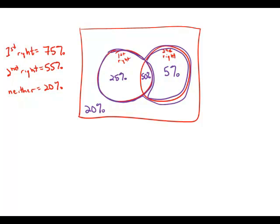That adds up to 100%. What we're interested in is the overlap region of 50%. And that is answer choice D.